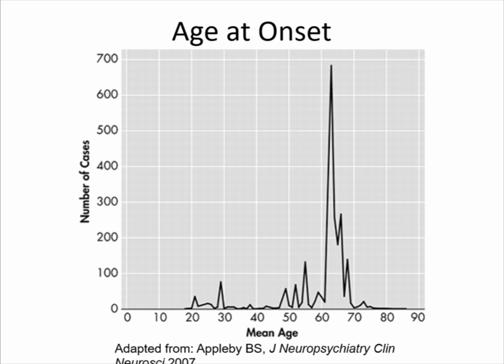If you look at age of onset, prion disease tends to be a middle- to late-life illness. Variant CJD generally occurs in much younger people — teens, 20s, and 30s. Genetic CJD tends to occur in midlife, like the 50s and 60s. Sporadic CJD tends to be a later-life illness with a mean age of onset of about 62. But there's a lot of variation — we've seen sporadic CJD in people as young as 13 or 14, variant CJD in people as old as 50, and the oldest U.S. case of sporadic CJD was 98.